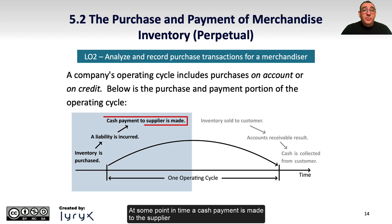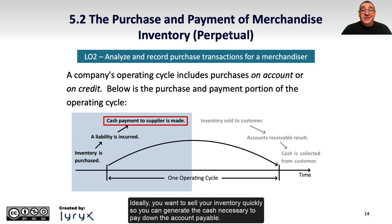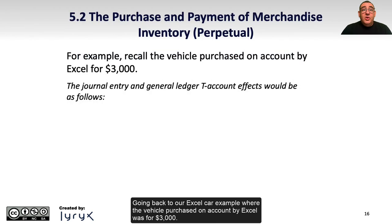At some point in time, a cash payment is made to the supplier, which could be before or after the inventory is actually sold. Ideally, you want to sell your inventory quickly so you can generate the cash necessary to pay down the account payable. Going back to our Excel car example where the vehicle purchased on account by Excel was for $3,000.